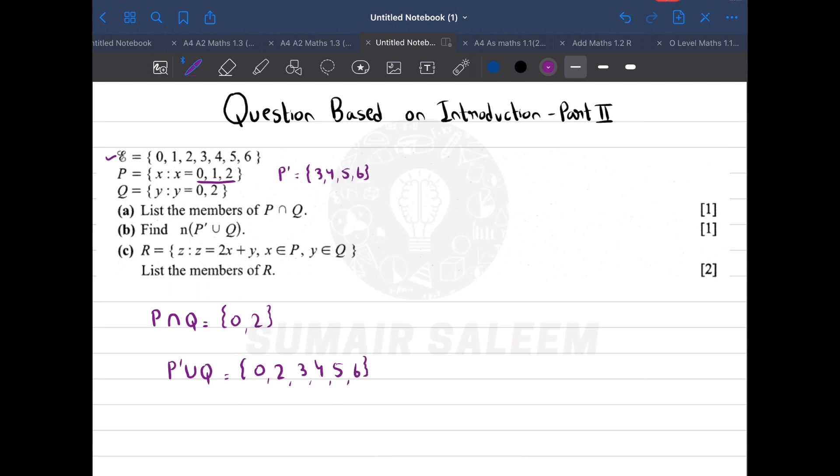Now will we get the marks? No, because the question is saying find n of P complement union Q. n means number of elements. How many elements are there? 1, 2, 3, 4, 5, 6. So my answer is 6.